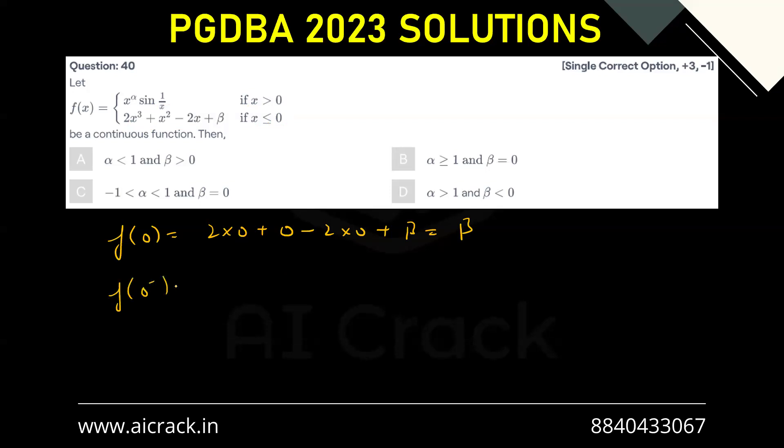If we talk about f of 0 minus, in that case we will again have to use this function only. So that comes out as 2 into minus h cube plus minus h whole square minus 2 into minus h plus beta. Now these all are negligible because they are h. So this also comes out as beta. This limit comes out as beta.